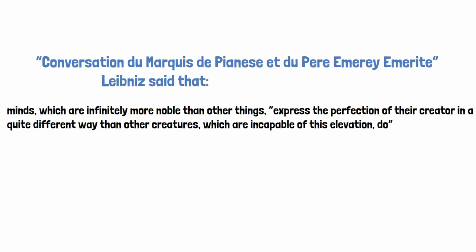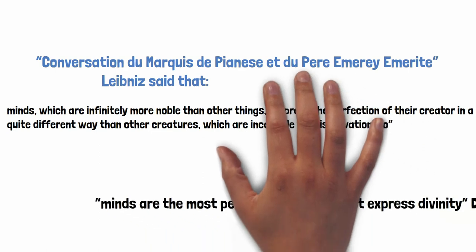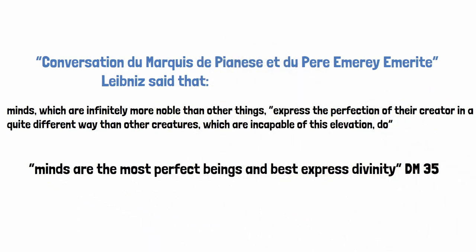Thus we find minds expressing God and some differences between how they express God and the way other substances do. Indeed even in the discourse there are hints that that is what is going on. Thus Leibniz says in DM 35 that minds are the most perfect beings and best express divinity, suggesting that other beings also express divinity, just not as well.